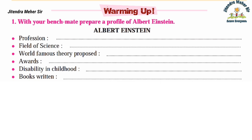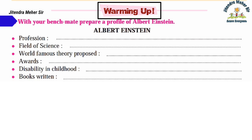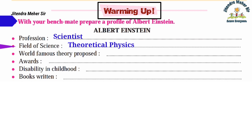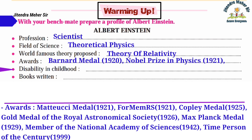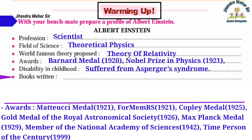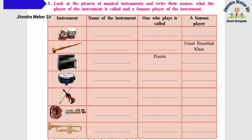First, we are going to solve the warming up activity. Prepare a profile of Albert Einstein: his profession is scientist, field of science is theoretical physics, world famous theory is the theory of relativity, he got many awards, and in childhood he suffered from Asperger's syndrome.